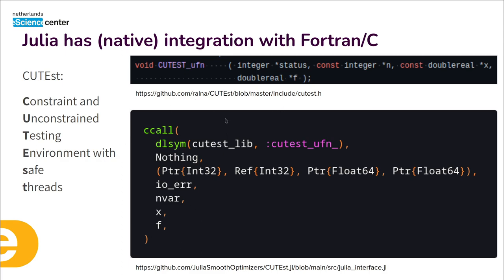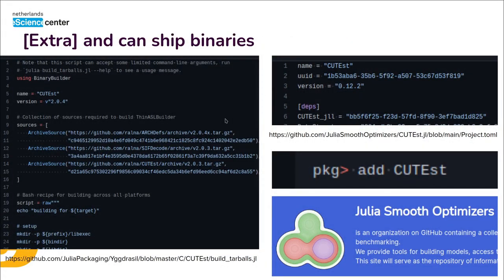Julia's integration with Fortran is extremely easy. As a side note, this is essentially what enabled my research for the last eight years. The JuliaOptimizers organization is where we keep all packages related to non-linear optimization — we have about 40 packages. An interesting extra feature is that the Julia package manager can now ship the CUTEst Fortran binary, built and checked for your specific architecture, alongside your code.